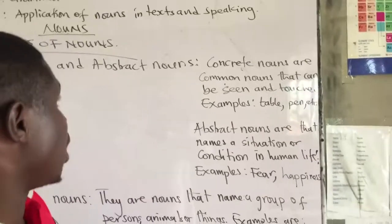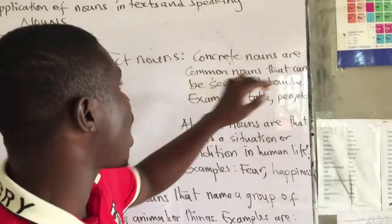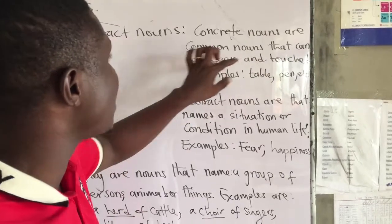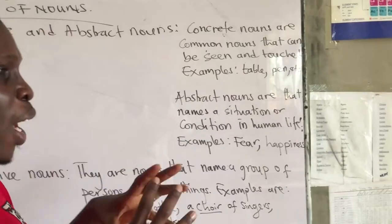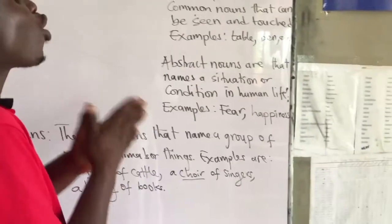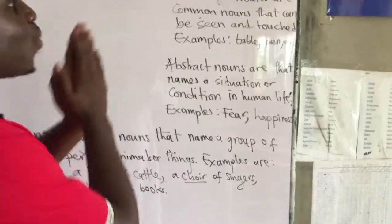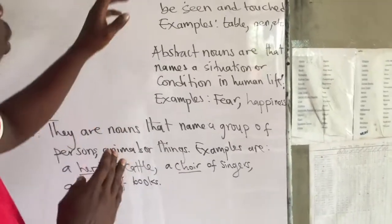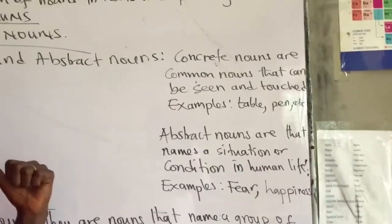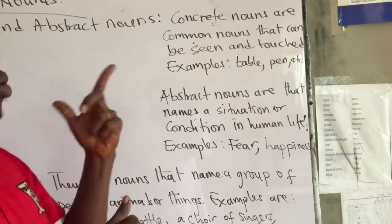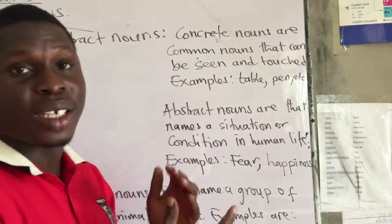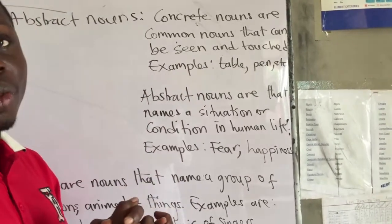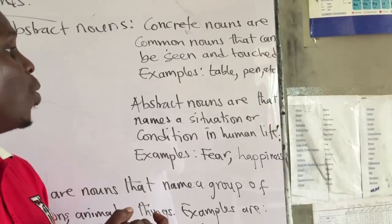Concrete nouns are nouns that can be seen and touched. I've specified common nouns, which means if you want to identify a concrete noun you have to ask yourself: is this a common noun? Then ask can it be touched or felt? For example, 'festival' is a common noun but can we touch and feel a festival? No. So festival is not a concrete noun. But 'table' — yes, it is a common noun and we can touch and see it, so table is a concrete noun.